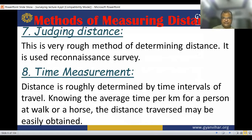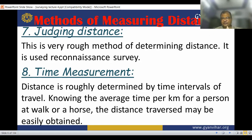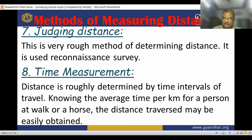Judging distance is a very rough method, used to determine distance in reconnaissance survey. What is reconnaissance survey? When any place has been decided for construction, a few engineers visit that place with very little assistance and decide at which location the construction item will be constructed and how it will be planned.